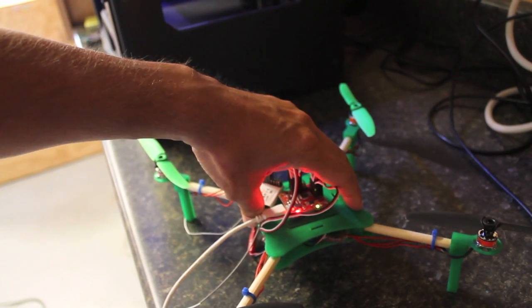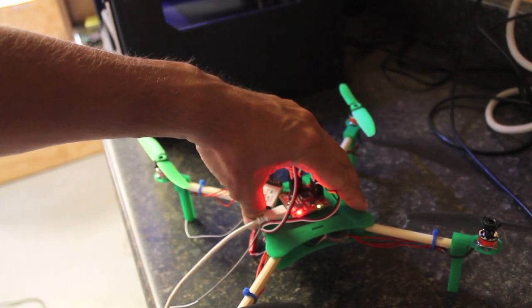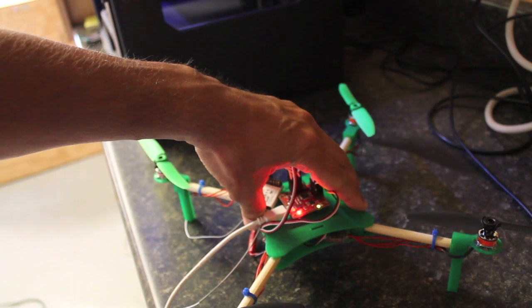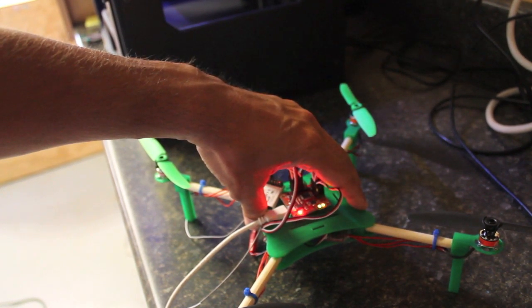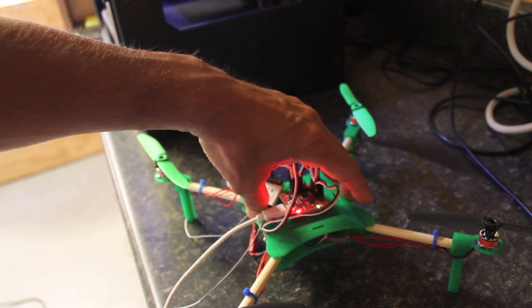So the manual actually points out this is a tiny quad. If you're doing 450 size or anything like that, you definitely want to remove your props when doing this calibration.